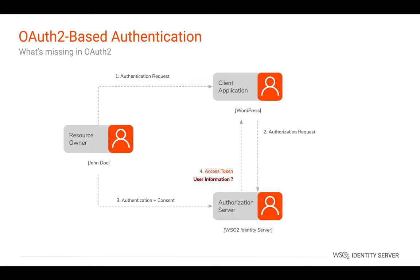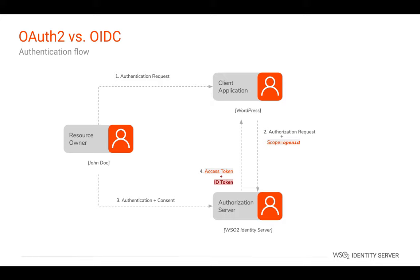Hence, the client application is not aware of the user-related information. We can bridge this gap by sending user information to the client application after the user's interaction with the authorization server. Let's look at the elaborated OIDC flow for further understanding.